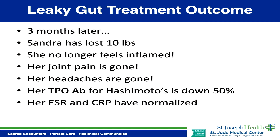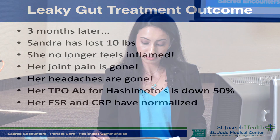Three months later, Sandra has lost 10 pounds, no longer feels inflamed, and her joint pain and headaches are gone. Her TPO antibody for Hashimoto's thyroid disease is down 50%, and her sed rate and CRP — the inflammation markers in her blood — have normalized. This is a great example of how treating gut inflammation and leaky gut can reduce inflammation throughout the whole body and lead to better regulation of the immune system in autoimmune disease.